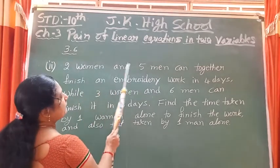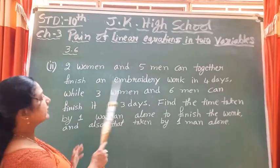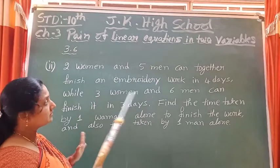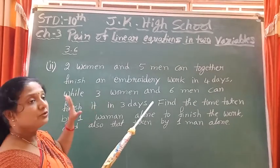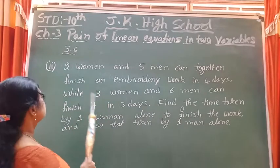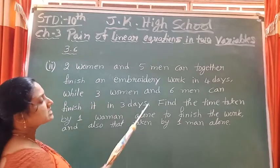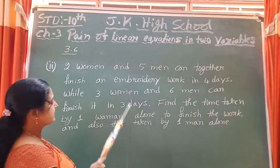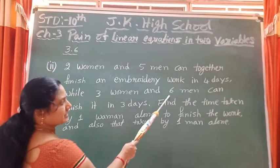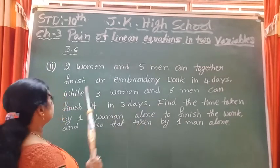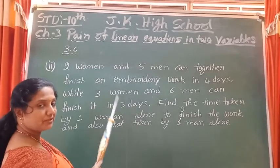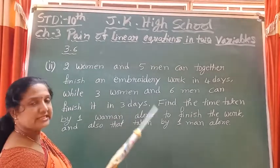2 women and 5 men both together can finish one embroidery work in 4 days. While 3 women and 6 men can finish it in 3 days — the number of women and men each increased by 1, so the number of days decreased because more people are working.